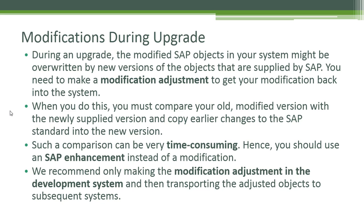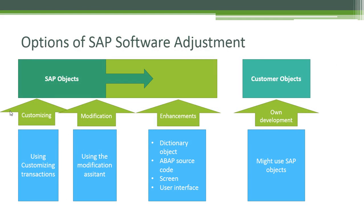We recommend only making the modification adjustment in the development system and then transporting the adjusted objects to subsequent systems. Looking at this graphic, SAP objects can be customizing objects — adjusted using customization transactions — or modified SAP objects using the modification assistant. You can also have enhancement objects covering dictionary objects, source code, screens, and user interfaces. On the other side, we have customer objects, which are our own development objects, and we may use SAP objects within them.